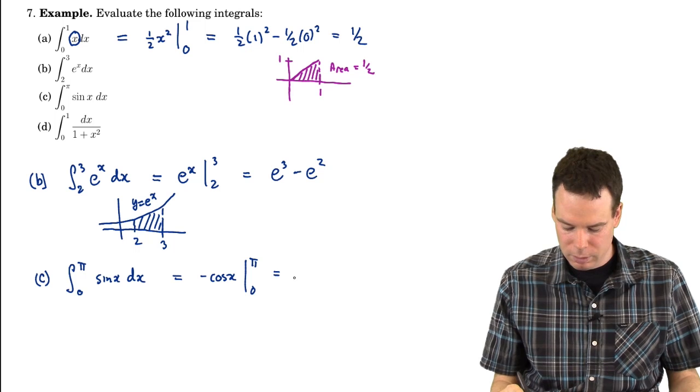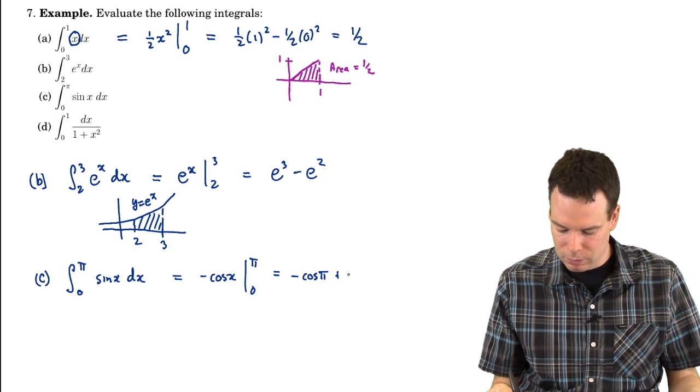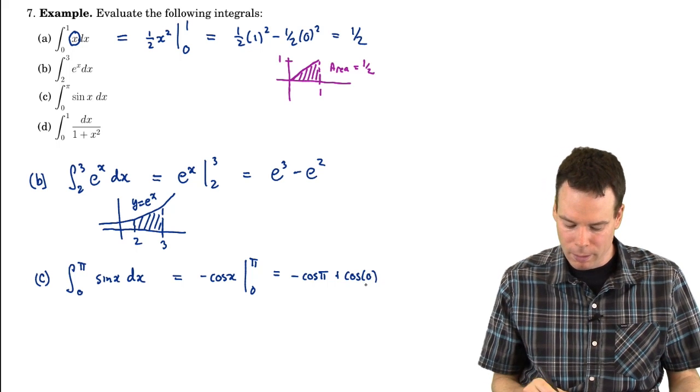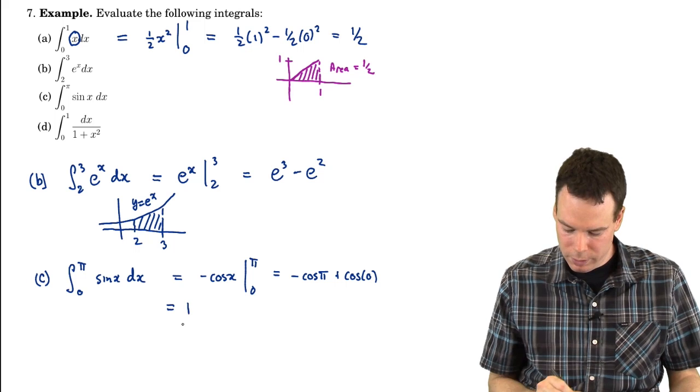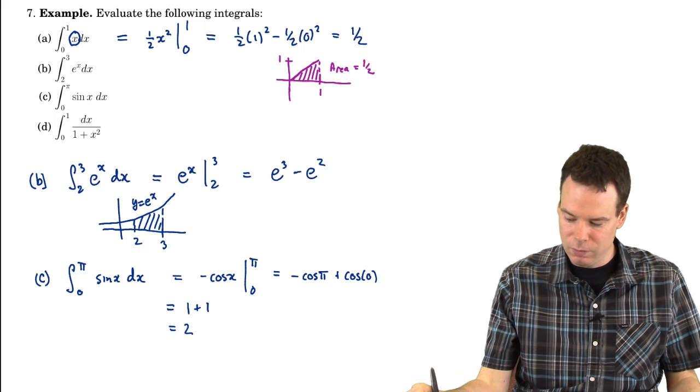Going from 0 to pi. So that's negative cos of pi minus negative cos of x, so that's plus cos of—and then we plug 0 in. What's cos of pi? That's negative 1. Negative negative 1 is 1. Cos of 0 is 1. So the value is 2.